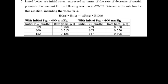We're on question 5, which is also given as initial rates. The values are given in terms of pressure. Listed below are the initial rates expressed in terms of the rate of decrease of partial pressures of reactants at a temperature. Determine the rate law for this reaction including the value of K. Our goal is to find the rate law and also the value of K.